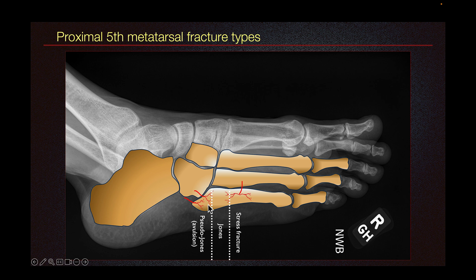Jones fracture does not involve the tarso-metatarsal articulation, but it involves the inter-metatarsal articulation between the proximal fourth and fifth metatarsal. Jones fracture is in a vascular watershed region, so this fracture does not heal well.